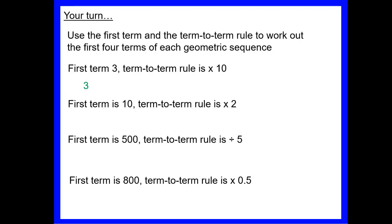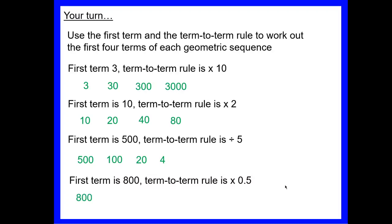For the first one starting at 3, multiplying by 10: 3, 30, 300, 3000. Starting at 10, multiplying by 2: 10, 20, 40, 80. Starting at 500, dividing by 5: 500, 100, 20, 4. Starting at 800, multiplying by a half — which is the same as dividing by 2 — gives 800, 400, 200, 100. Always use your newest number to find the next one.